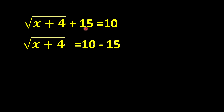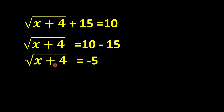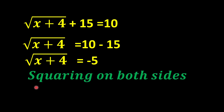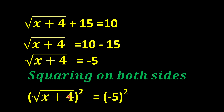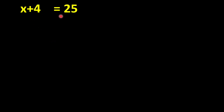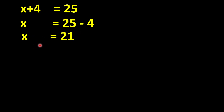First, we will send this 15 to the other side of the equation, so it will become 10 minus 15. Now, under root of x plus 4 is equal to minus 5. For the value of x, we will square both sides of the equation. After squaring, the square cancels the square root, giving us x plus 4 equals 25.